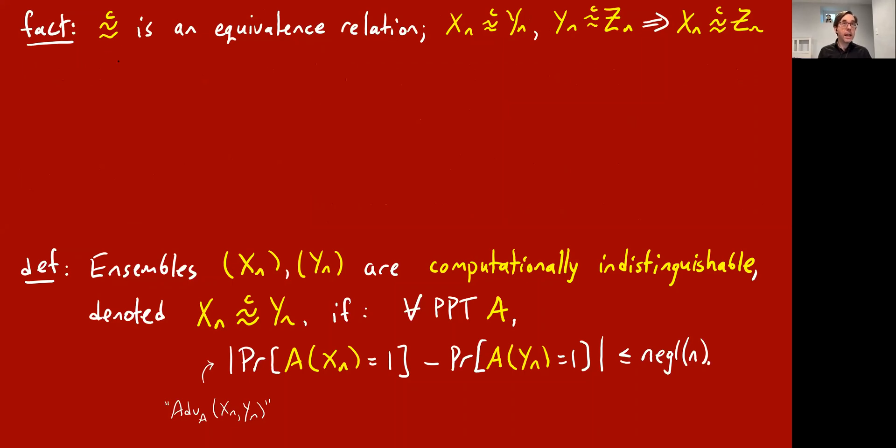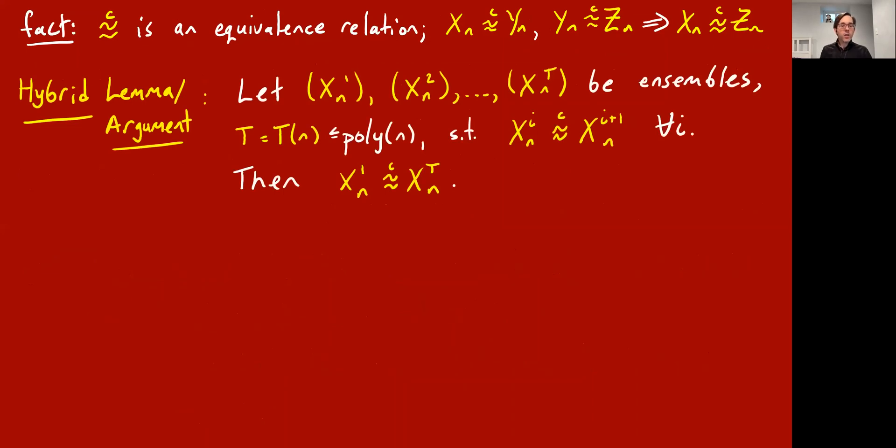And so this is a small fact, but this is an equivalence relation. It's not hard to see that Xn is computationally indistinguishable from Xn. Algorithm can't get any advantage there. It's 0. And it's symmetric. The key point is that it has this triangle inequality sort of property, that if Xn is computationally indistinguishable from Yn and Yn is computationally indistinguishable from Zn, then X and Z are also computationally indistinguishable. In fact, there's a stronger version of this. This is sort of saying if you have three ensembles and these two are indistinguishable to PPT algorithms and these two are, then so are the outside two. You can even extend this to 10 or 100 or even polynomially many sequences.